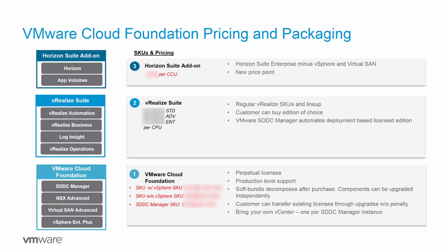Now I'm going to talk about the pricing and packaging aspects of Cloud Foundation. As mentioned earlier, the private cloud offering of Cloud Foundation consists of vSphere Enterprise Edition, vSAN Advanced Edition, NSX Advanced Edition, and the SDDC Manager — those four components make up Cloud Foundation. We also offer the ability to upgrade both NSX and vSAN editions to Enterprise if the customer chooses to use the capabilities of those higher-level editions.